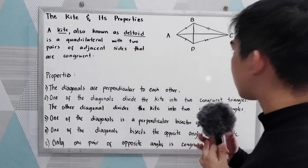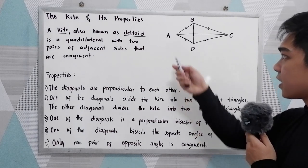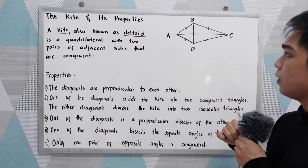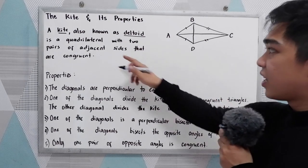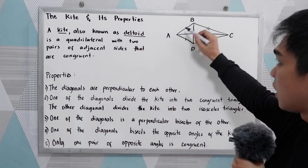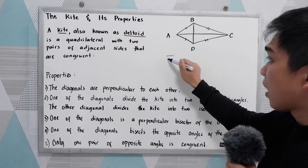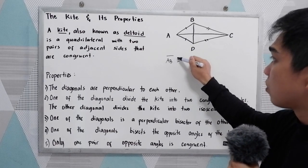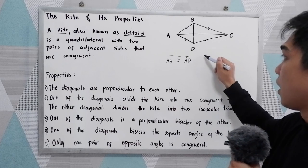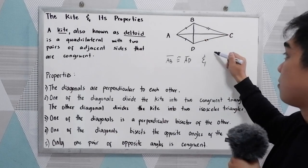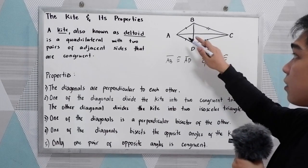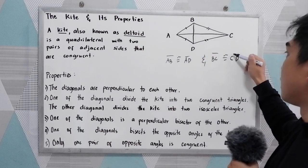To illustrate, let's say we have our kite ABCD. Adjacent sides are congruent: side AB is congruent to side AD, and side BC is congruent to side CD.